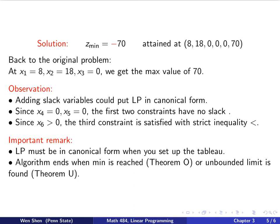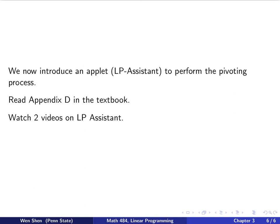That leads to the next great idea. Since the pivoting process is repetitive, let's ask the computer for help. We will now introduce an applet called LP Assistant, which you can download from the course canvas, and that will perform the pivoting process for you. The tutorial for LP Assistant is given in Appendix D, explained in great detail. I will also make two videos on how to use LP Assistant for solving the problems in our examples. So you can open up LP Assistant by yourself and play with it. Hope you enjoyed it — I'll see you next time.